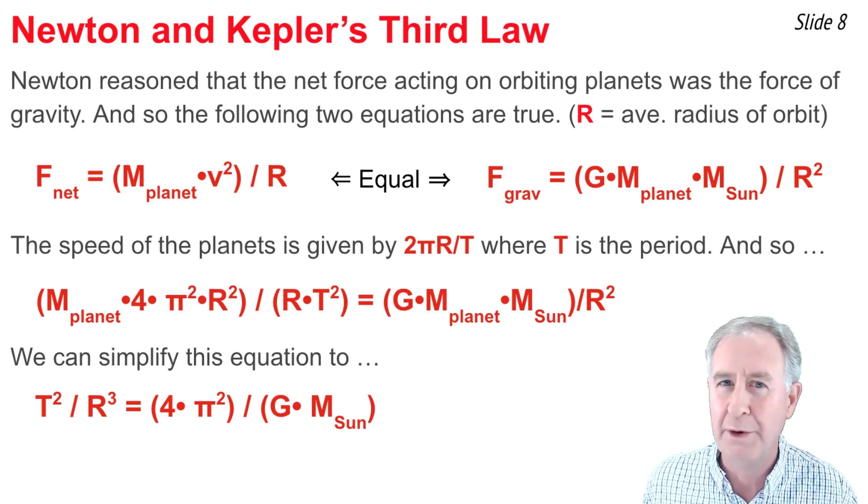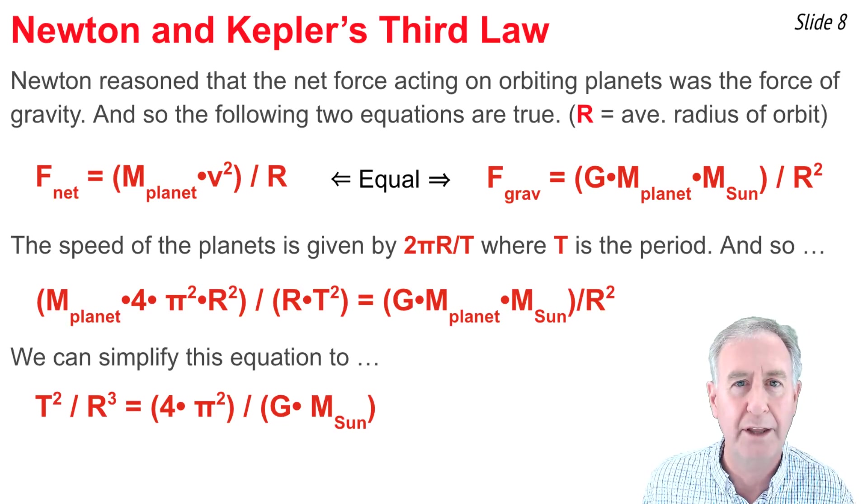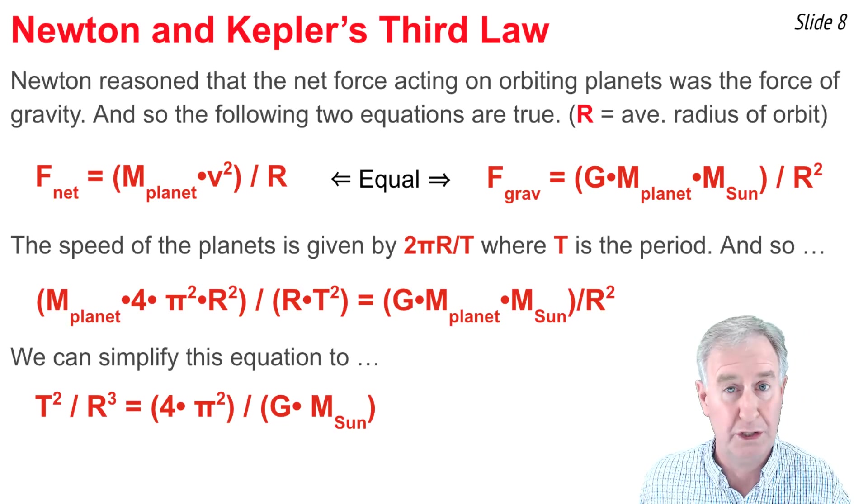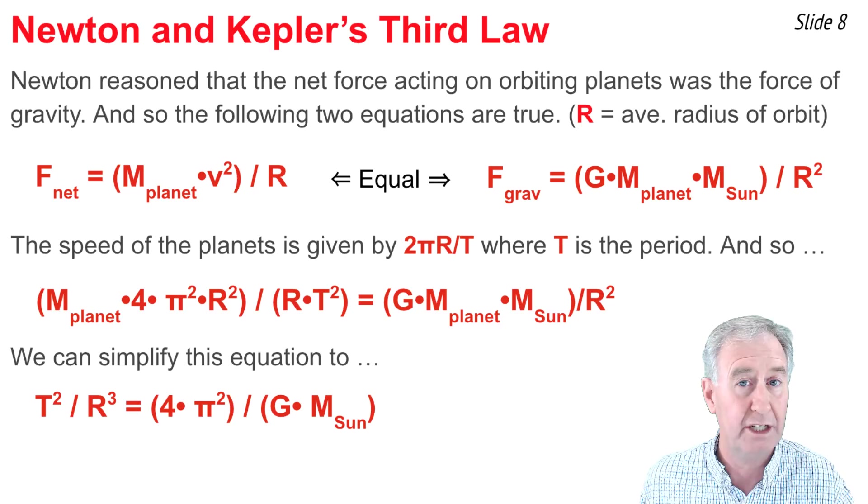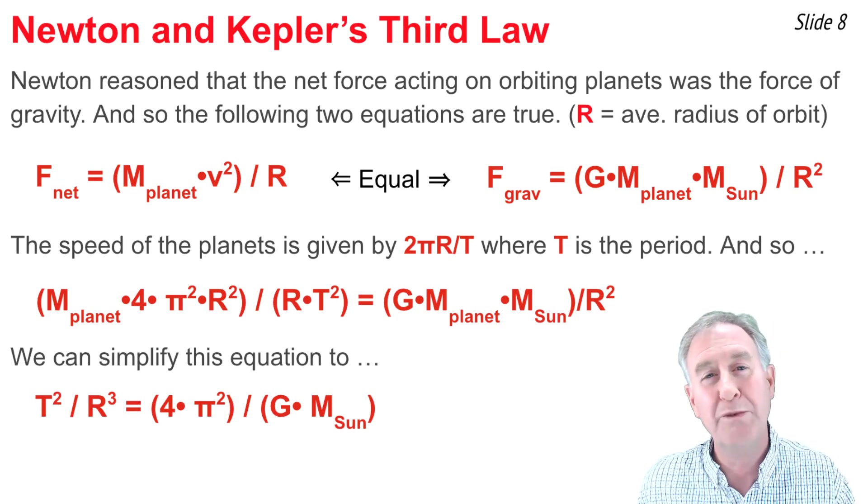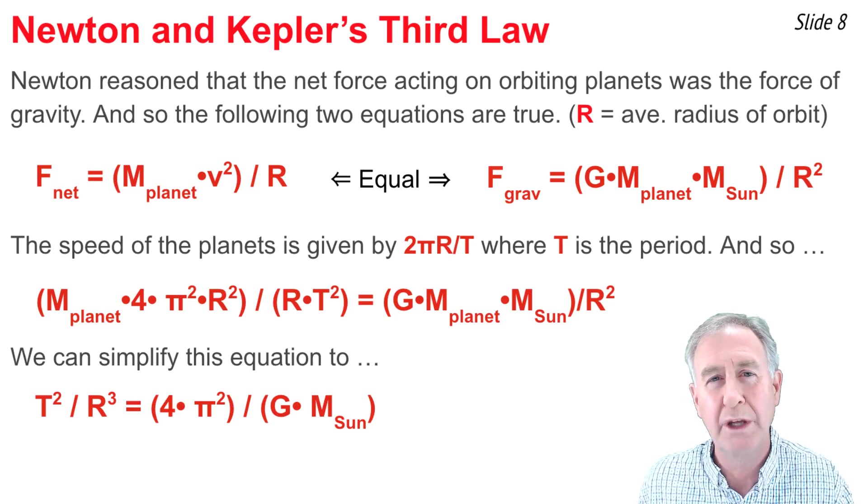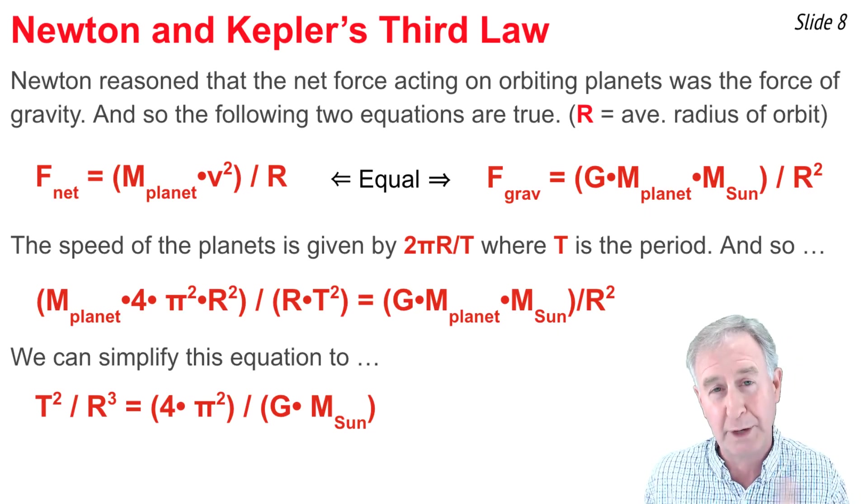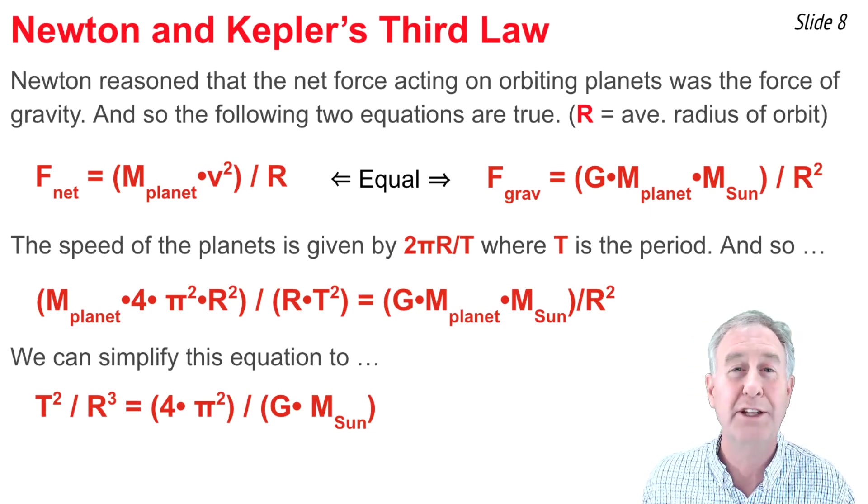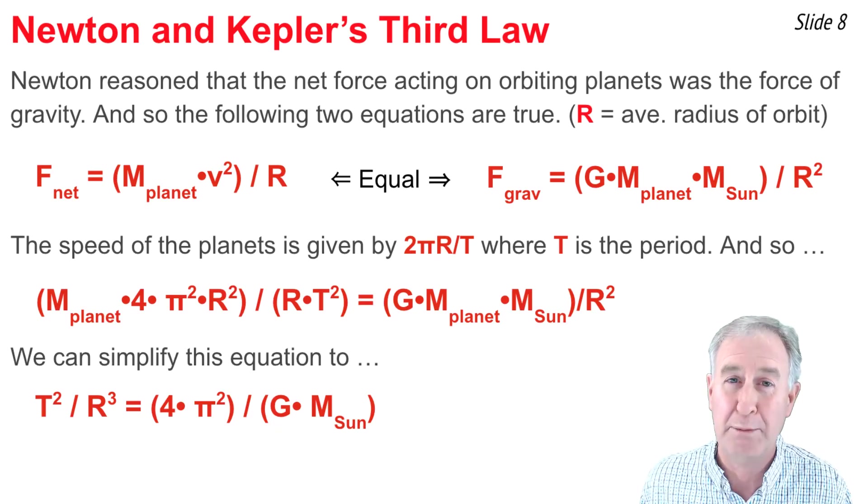There's nothing on the right side of that equation that is planetary dependent. On the left side of the equation, every planet would have a different T and a different r, but the ratio of T² to R³ is going to be equal to a numerical value on the right side of the equation that is going to be the same for every planet.